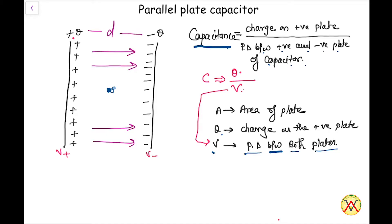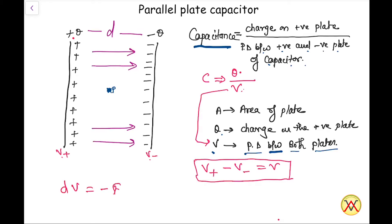We have to calculate the potential difference, that is V positive minus V negative. For this, as we already know from our electrostatics chapter, dV equals minus E vector dot dR vector. If we can calculate the electric field between the two plates and take the dot product with the displacement vector from V positive to V negative, we will get the potential difference.